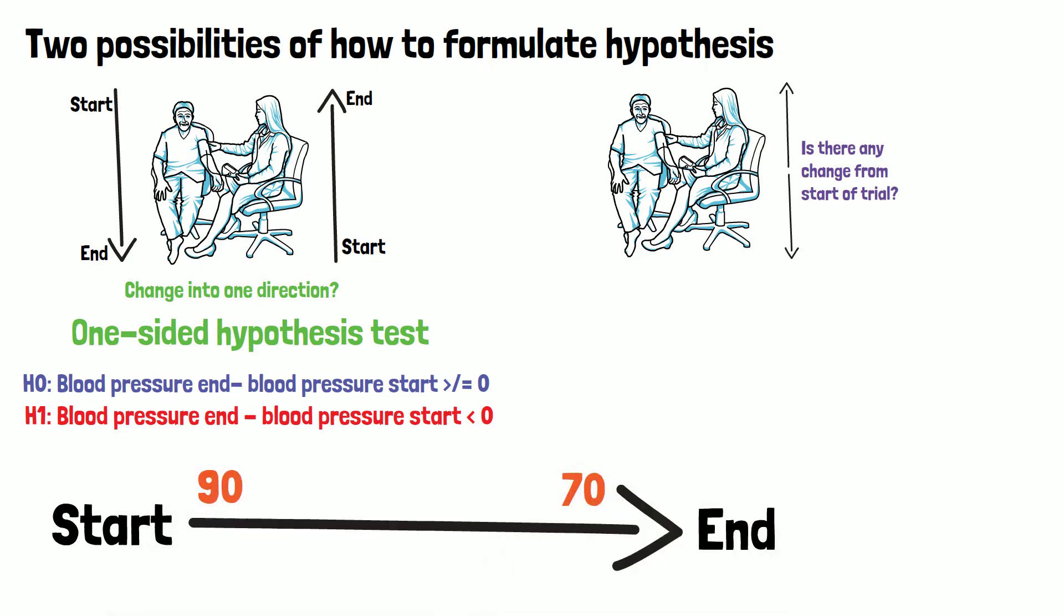For example, a blood pressure of 70 in the end minus 90 in the beginning of the trial equals minus 20. The blood pressure has decreased by 20 millimeters mercury.